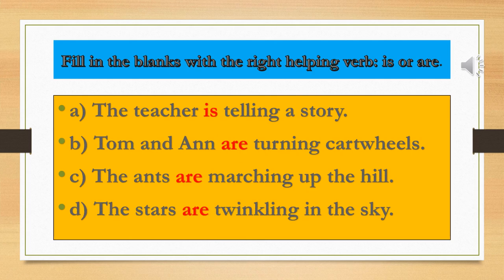Now let's start our grammar time. On page number 58, some rules are given. We have to use 'is' or 'are' according to the situation. We use 'is' with the singular and 'are' with the plural. Singular subjects include she, it, he. Plural subjects include we and they. With 'I', we always use 'am'. This happens in present continuous tense, and we use '-ing' on the verb.